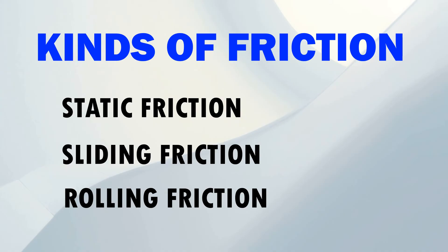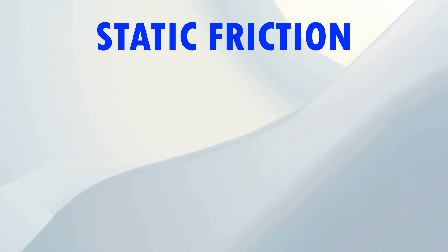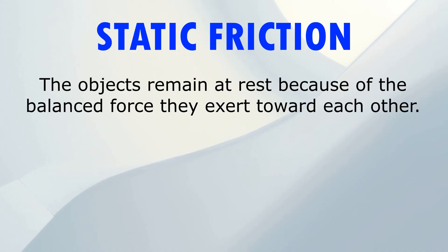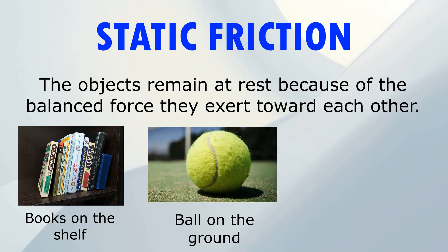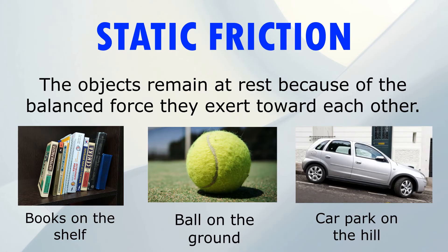Static Friction. Objects remain at rest because of the balanced force they exert toward each other. Examples include: a book on the shelf, a ball on the ground, and a car parked on a hill.